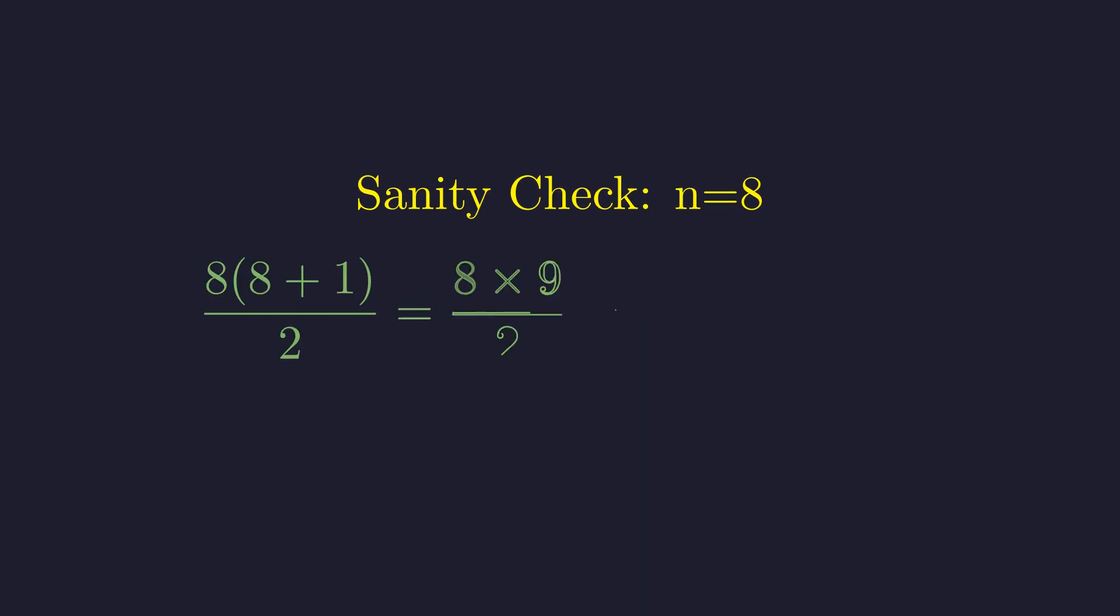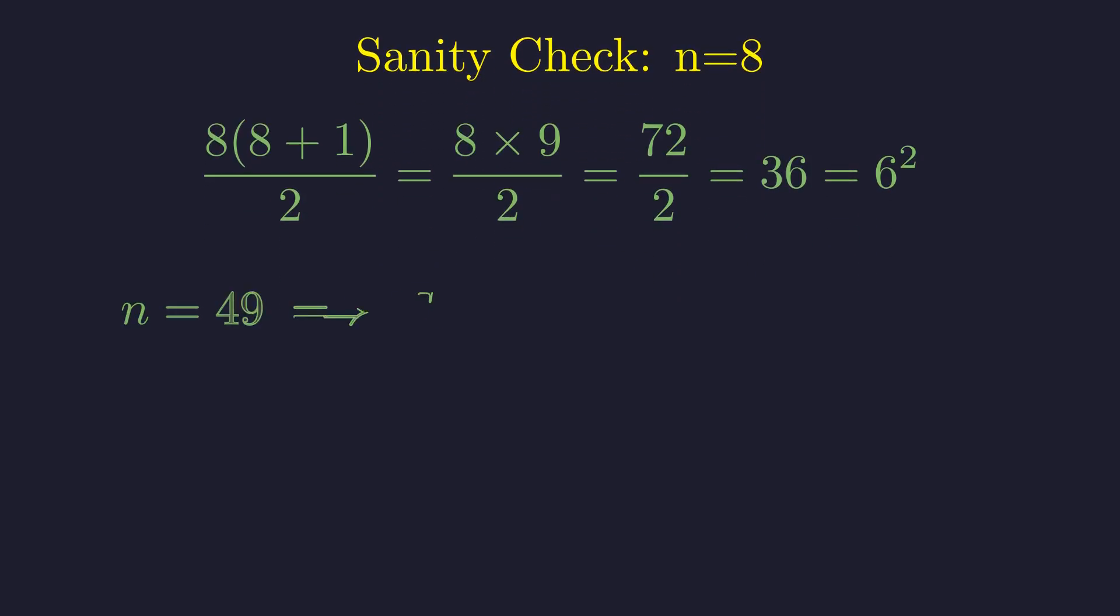Let's quickly verify our solution for n equals 8. The eighth triangular number is 8 times 9 divided by 2, which is 36. And 36 is indeed 6 squared. The result holds. Let's verify another solution. For n equals 49, the triangular number is 1225, which equals 35 squared. Excellent.